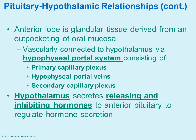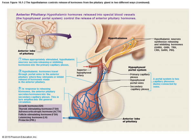The anterior pituitary is composed of glandular tissue, so it produces hormones there. The release of hormones from the anterior pituitary is controlled by the hypothalamus, which can both stimulate and inhibit hormone release. Depending on the stimulus, signals come from the hypothalamus, travel down to the anterior pituitary, and trigger hormone release there.